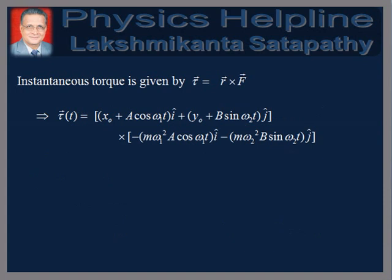The instantaneous torque is given by τ equals R cross F, which gives τ(T) equals [(X₀ plus A cos(ω₁T)) î plus (Y₀ plus B sin(ω₂T)) ĵ] cross [minus mω₁²A cos(ω₁T) î minus mω₂²B sin(ω₂T) ĵ].